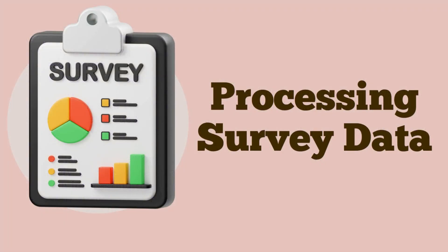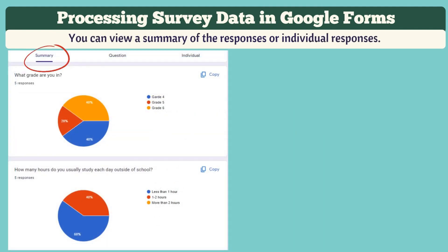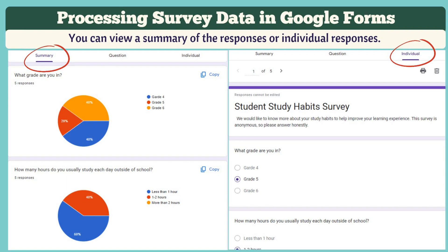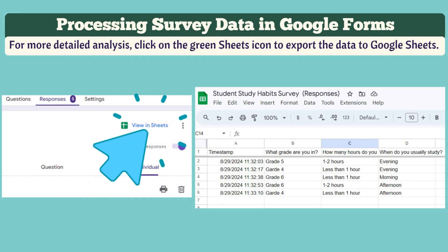Now let's learn how to process your survey data in Google Forms. First, click on the Responses tab. You can view a summary of the responses or individual responses. For more detailed analysis, click on the green Sheets icon to export the data to Google Sheets.